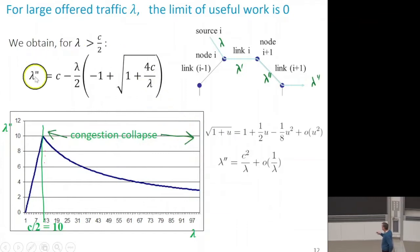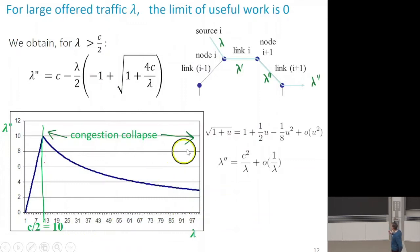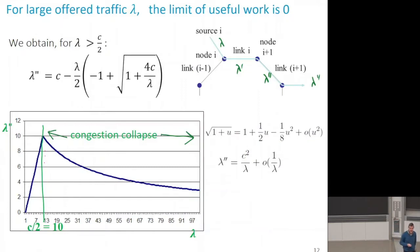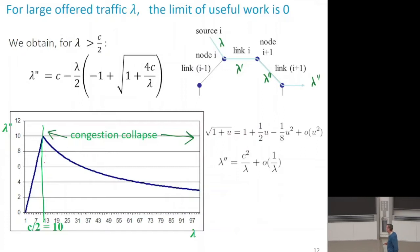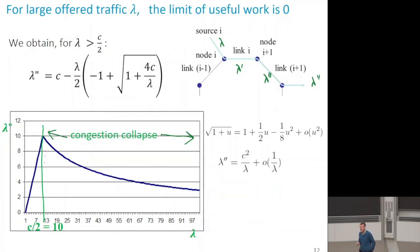This is exactly the definition of congestion collapse. By curiosity, what is the limit when lambda goes to infinity? With a Taylor expansion, we find that lambda second is on the order of 1 over lambda — so it really goes to 0 when lambda goes to infinity. This is exactly what happened on the internet in 1986, as Van Jacobsen reported, and has been reported in other circumstances as well.